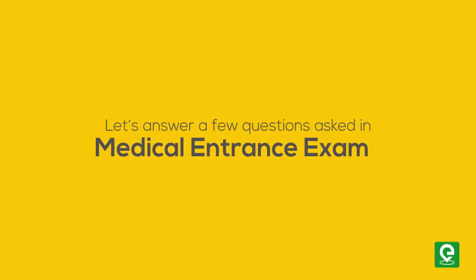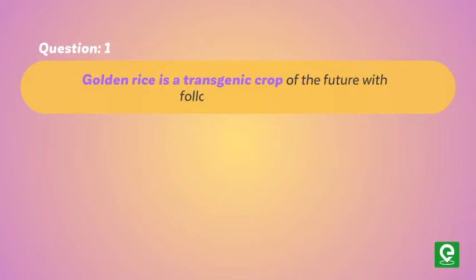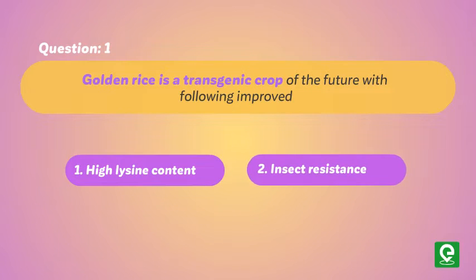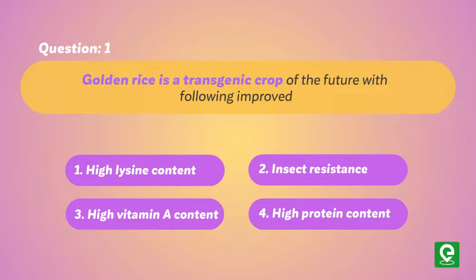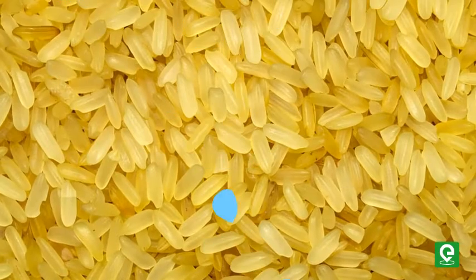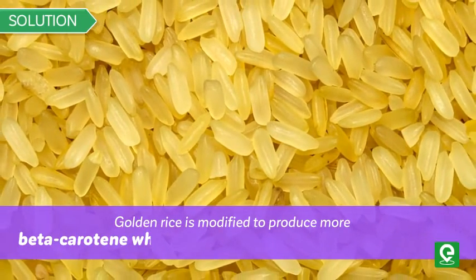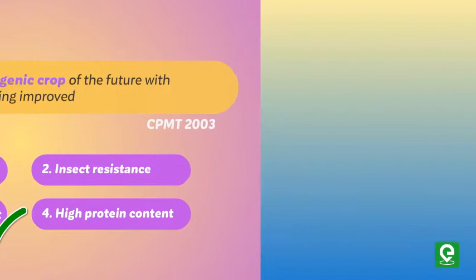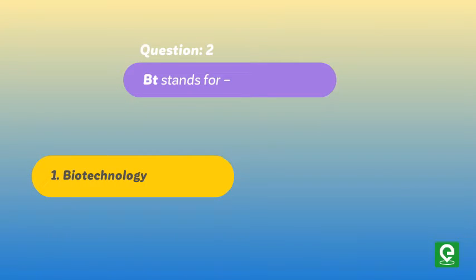Question one (CPMT 2003): Golden rice is a transgenic crop of the future with — option one: high lysine content; option two: insect resistance; option three: high vitamin A content; option four: high protein content. Solution: Golden rice is modified to produce more beta carotene, which is further converted into vitamin A. Hence, option three is the correct answer.